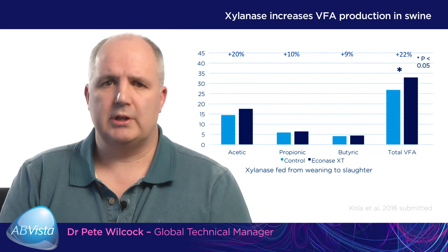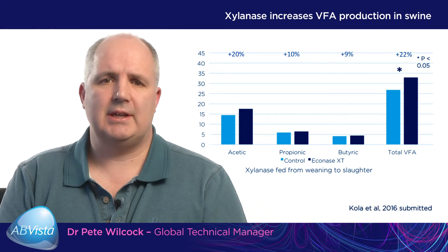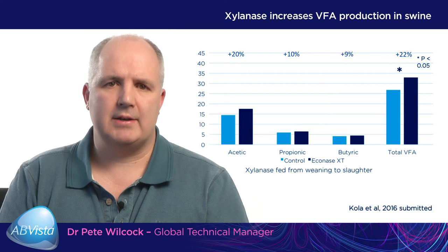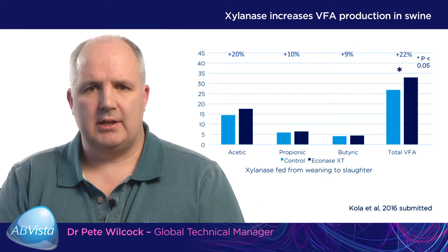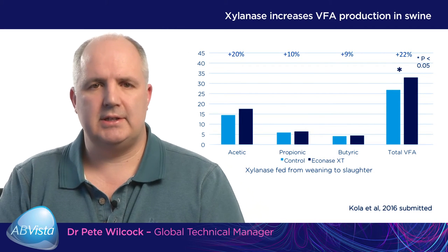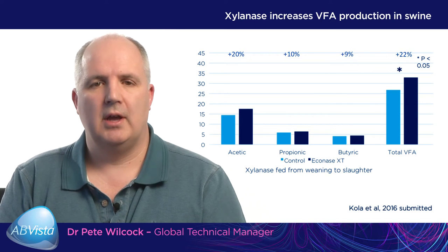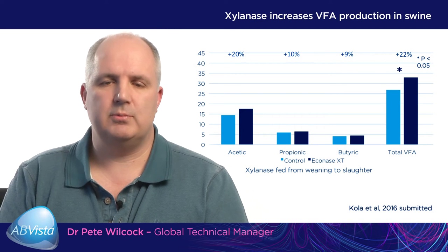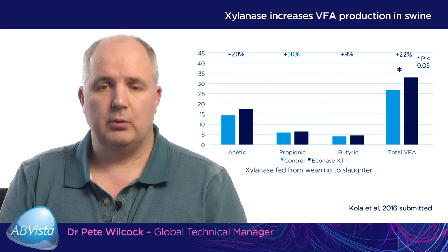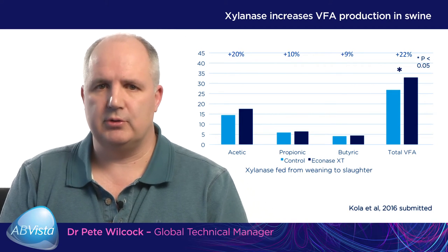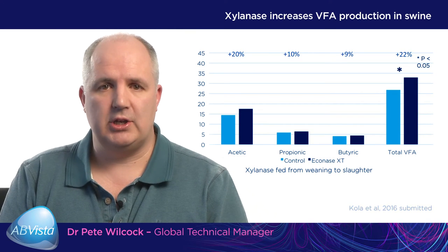One key component of the xylooligomer mechanism is volatile fatty acid production. A trial conducted in weaned-to-finished pigs examined the impact of adding xylanase to a corn-soy distillers-based ration. The addition of xylanase showed a 20% increase in fecal acetic acid, 10% increase in propionic acid, and 9% increase in butyric acid, resulting in a significant 22% increase in total volatile fatty acid content, supporting the AXOS mechanism and its importance in older pigs for energy utilization and feed efficiency.